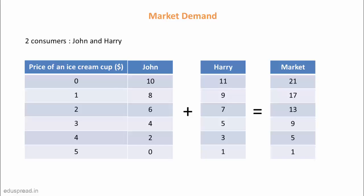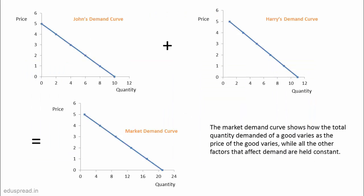Now that we have got the market demand schedule, we can simply graph this to get the market demand curve. I have drawn three demand curves here — the first two are for John and Harry respectively, and the third is the market demand curve. The market demand curve shows how the total quantity of a good varies as the price of the good varies, while all other factors that affect demand are held constant. So this is all about the market demand schedule and market demand curve.